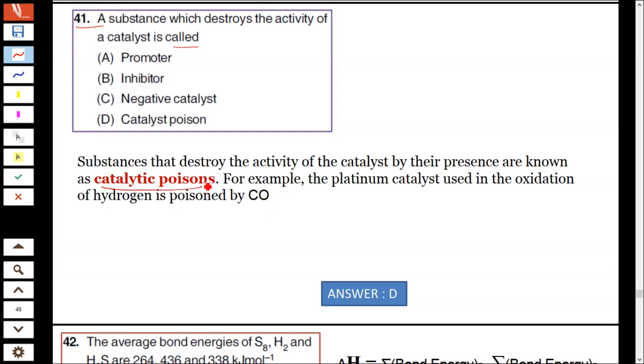Hence option D is correct. Promoter promotes the catalytic activity, so it's not correct. Inhibitor also enhances the catalytic activity, it's not correct. Among options C and D, it's not a negative catalyst.